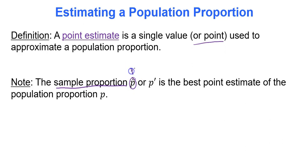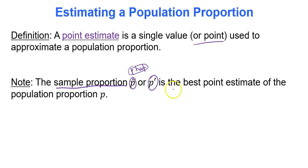P-hat is pretty much the main notation used in this course, though some books also use p-prime. P-hat is the best point estimate for the population proportion p. So we use p-hat to predict p.